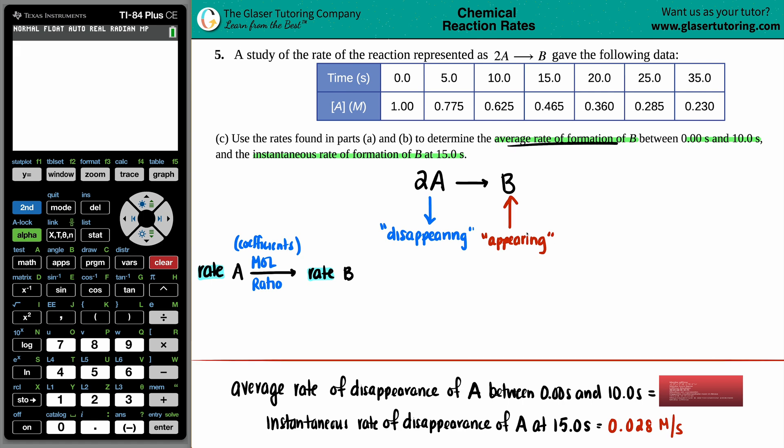Let's find the average rate of formation of B between 0.00 seconds and 10 seconds. We start with what we're given. We know the rate of disappearance of A was 0.0375 molarity per second of A. Now just use those mole ratios. Times by the ratio. All you have to do is drop down the substance - you don't have to drop down the units - and put who you want at the end. In this case we want B. These are your mole ratios.